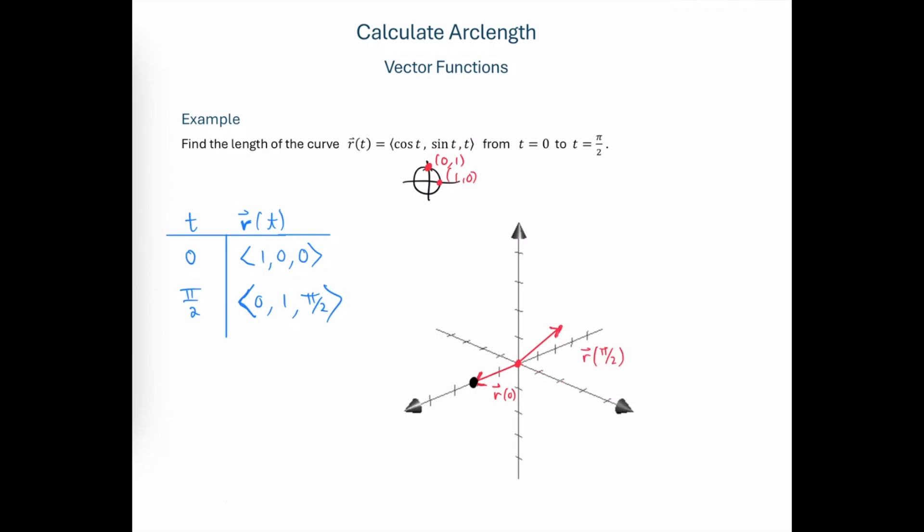So we have an output vector that is terminating at this ordered triple. So our helix is going to start here, and then move in this direction around the z-axis, and the length of the curve that we're after starts at 1, 0, 0, and finishes at 0, 1, π over 2.